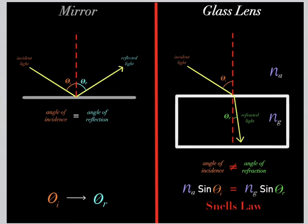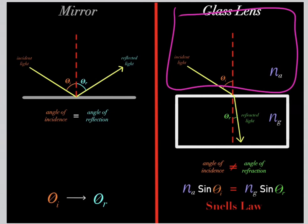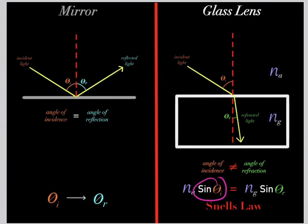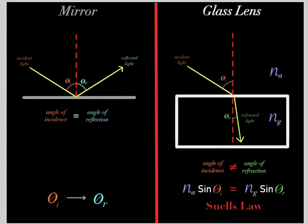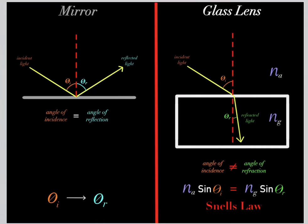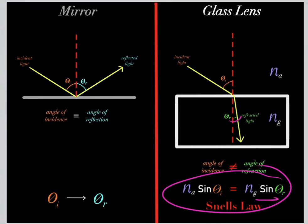Snell's law tells us: if you know the index of refraction of the air medium and multiply it by the sine of the angle of incidence, that will equal the index of refraction of the glass medium times the sine of the angle of refraction. This is the relationship between the angle of incidence and the angle of refraction.